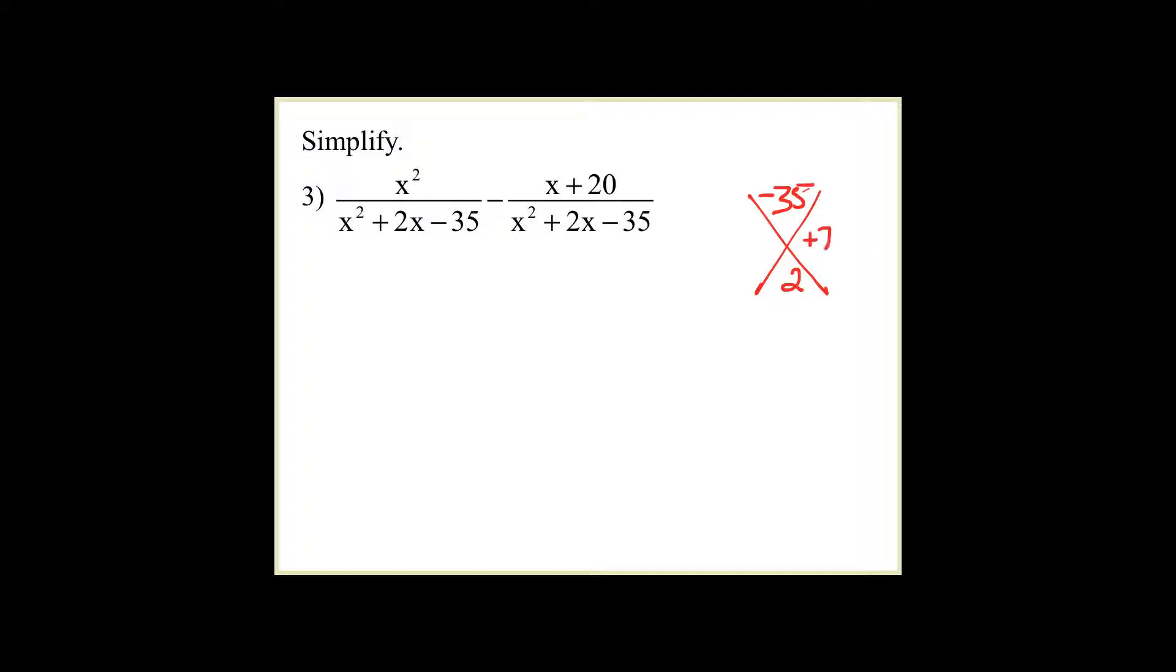positive 7 and negative 5. So this factors to x minus 5 times x plus 7. That's the denominator.